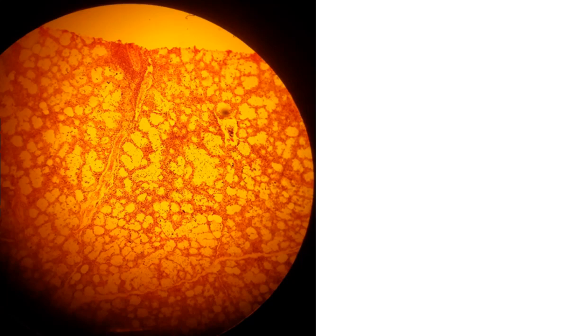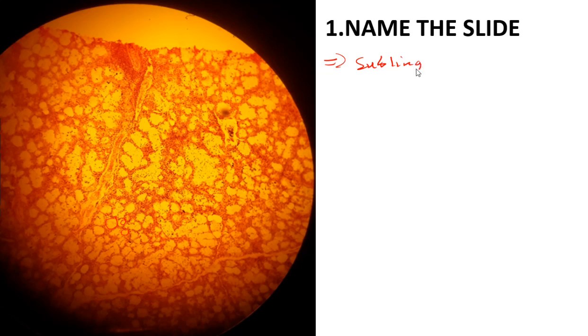The first question on the first slide is: name the slide. This slide is made up of dense irregular connective tissue and you can also take note of numerous adipocytes. If you look at the numerous adipocytes making up this slide, this slide is just the sublingual gland.